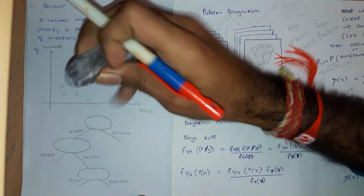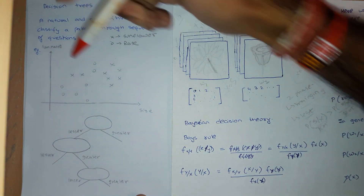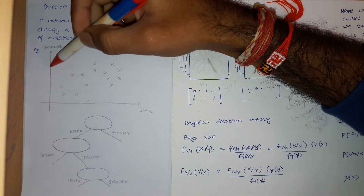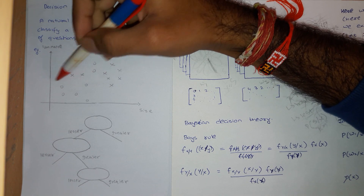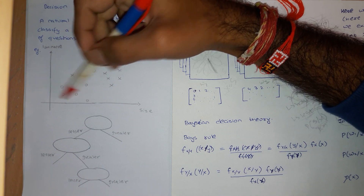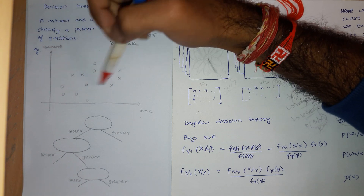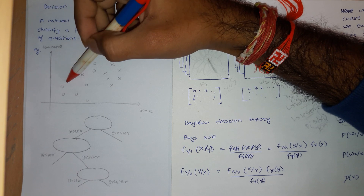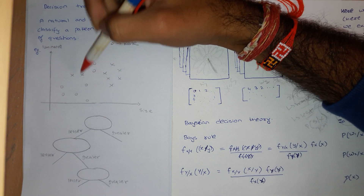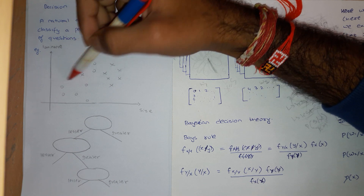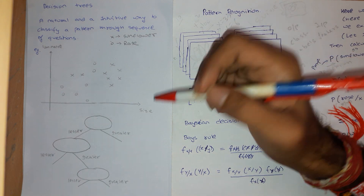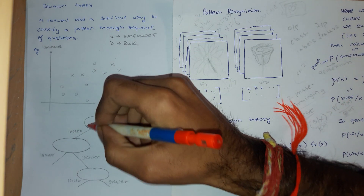If instead I take luminance as my first feature, you can see it is not very easy to get a good classification at the first instance, because whatever line I make there will be an error on both sides. So I'll take size as my first feature.